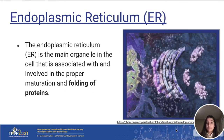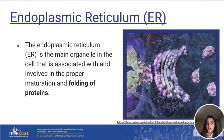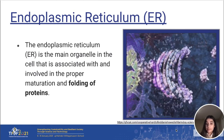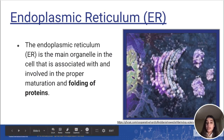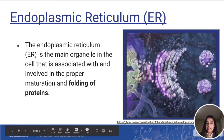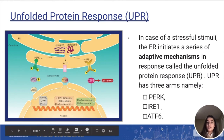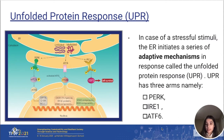The endoplasmic reticulum is the main organelle in the cell that is associated with proper folding and maturation of proteins. This image right here displays an endoplasmic reticulum in a cell in action. Sometimes what happens is protein folding goes wrong, and there is a misfolded protein. This misfolded protein can then cause stress in the endoplasmic reticulum, and in order to respond to this stressful stimuli, the endoplasmic reticulum initiates a series of adaptive mechanisms. This is what is called the unfolded protein response.